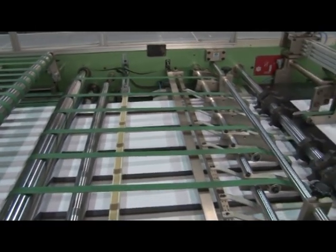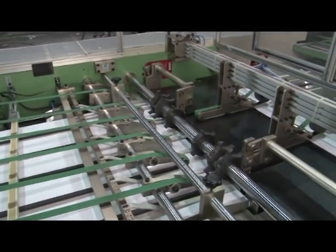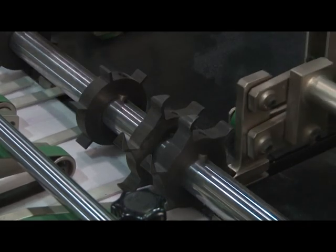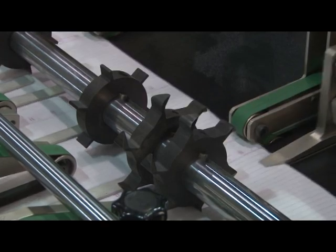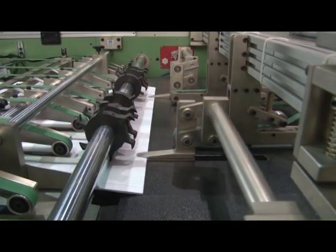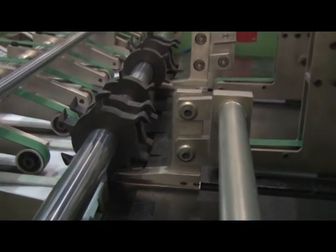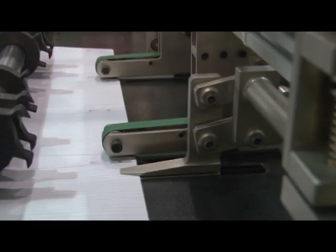Automatic sheet counting unit is for counting the sheets by the encoder and the collating unit is for collating the bunch of counted sheets controlled by servo motor by the touch screen on panel. This unit is also provided with a robot system to pick up the counted sheet bunch from the separator and put on the conveyor table for further process.